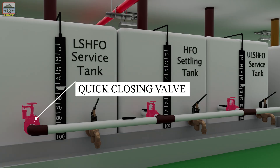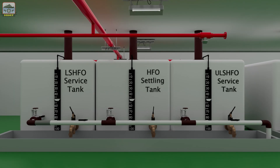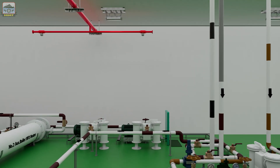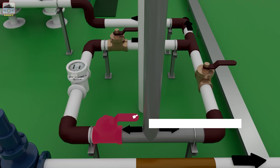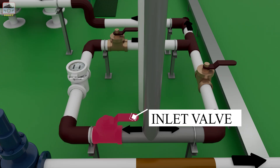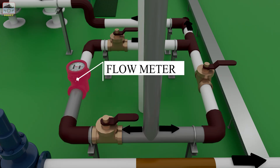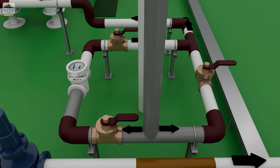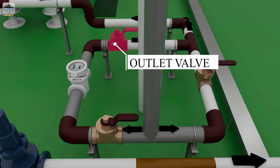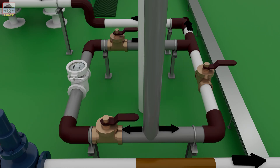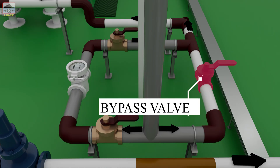Quick closing valves, which can be closed from outside the machinery space in case of fire inside the engine room. Inlet valve to the flow meter. Flow meter — this is used for the calculation of heavy fuel oil consumption for the boiler. Outlet valve of the flow meter. Bypass valve for the flow meter.